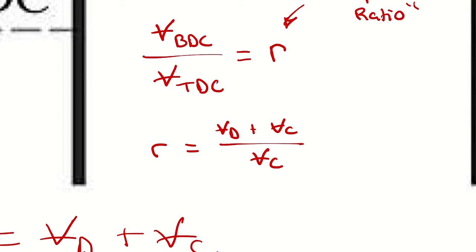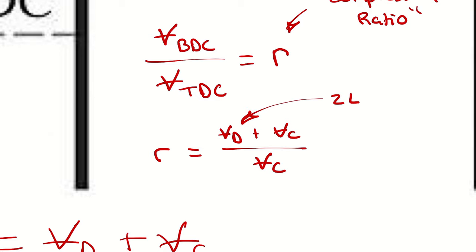This is useful because the displaced volume is the one that is typically talked about. For example, if you bought a car with a 2-liter engine, that 2-liter volume is the displaced volume. If it's a 4-cylinder engine, that means each cylinder has a displaced volume of half a liter.